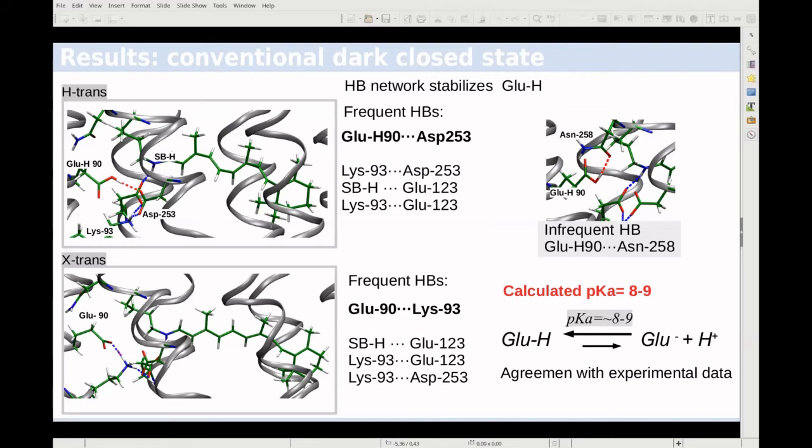For X-trans, the system is not well stabilized because it interacts just with Lys-93 and there is no water, no solvation. The pKa calculated with PMM is about 9, and thus we are in agreement with the experimental data showing that glutamic acid in this system is protonated.